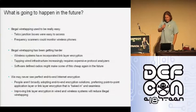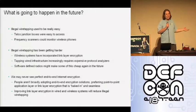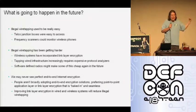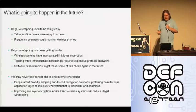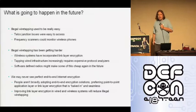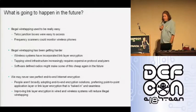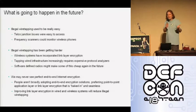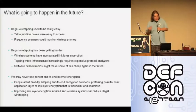So what's going to happen in the future? Illegal wiretapping used to be really easy — telco junction boxes were pretty easy to access with alligator clips, and frequency scanners could listen to cordless or cellular phone calls. Over time that's gotten harder. Cell phones now usually have some encryption, and it's more difficult to listen at the junction box because it's not just a voice call over copper anymore — you've got voice over IP running over ADSL with whole protocol stacks to parse.